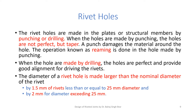The rivet holes are made in the plates or structural members by punching or drilling. When the holes are made by punching, the holes are not perfect but tapered, and this requires an additional operation called reaming to make the holes accurate in geometry. When the holes are made by drilling, the holes are perfect and provide good alignment for driving the rivets. The diameter of a rivet hole is made larger than the nominal diameter of the rivet — 1.5 mm larger when the rivet diameter is less than or equal to 25 mm, and 2 mm larger for rivet diameters more than 25 mm.